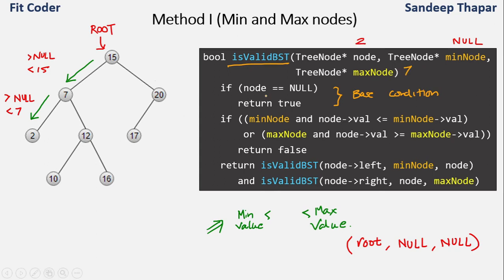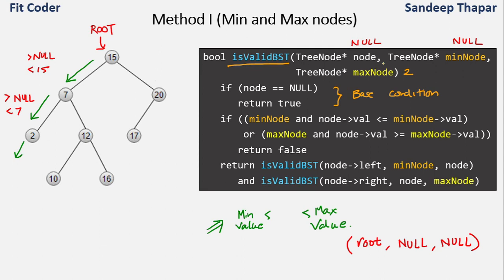We call the left subtree of 2, which is null, with min=null and max=2. The node is null so the base condition is true, and we return. Back at node 2, we call the right subtree of 2 which is also null, so we return again. The function call for 2 ends and we backtrack to 7. Now we call the right subtree of 7, which has value 12, with min=7 and max=15.